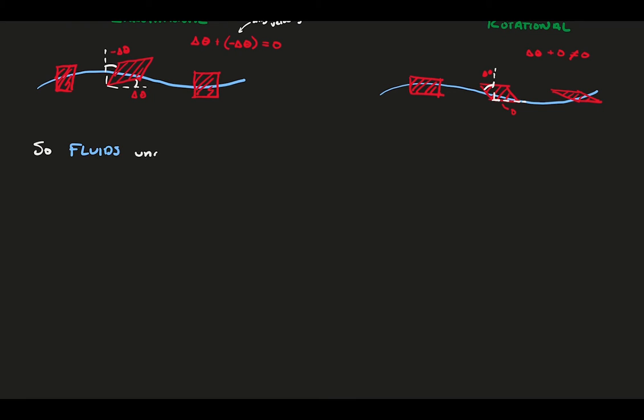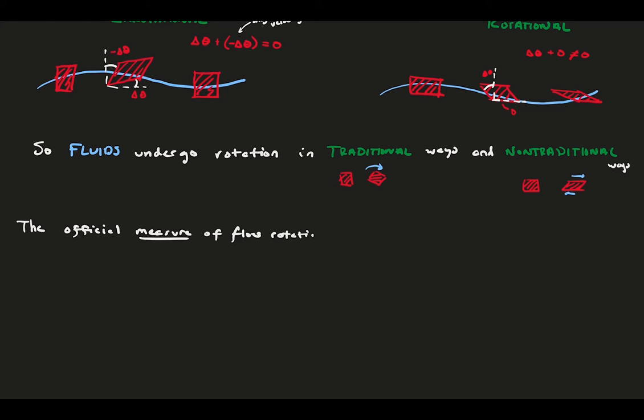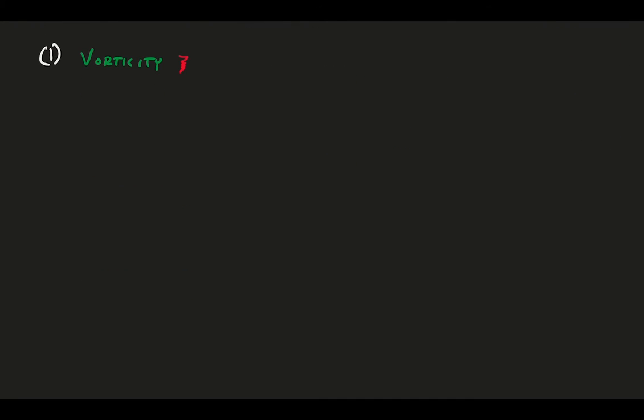So, fluids undergo rotation in the traditional sense, like a solid body would rotate, and in non-traditional ways unique to deformable fluids, which is called distortion. Above, we mentioned the angular velocity as representing the rotation, but the true measure of rotation in a fluid is something called the vorticity. Let's define this vorticity with a bit more mathematical rigor.